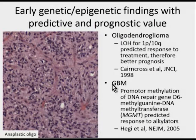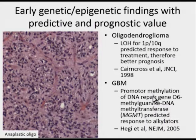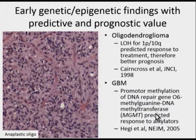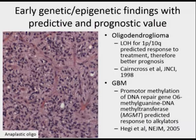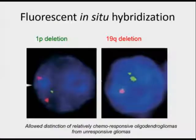In GBMs, the methylation of the MGMT promoter predicted response to alkylating agents, and this has also been a very important finding that has translated to utility in the clinic. I'll show you some examples of how these studies are done.